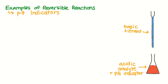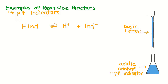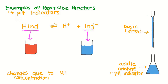When we first add the pH indicator to our solution, it's one color. But as we perform the titration experiment — in this case adding a base to an acid — the pH will change. At a certain point, when we've added enough of our base, the pH indicator will suddenly change color. As it turns out, these pH indicators are large organic molecules that have two forms. In one form, the indicator has a hydrogen and it's one color. In the other form, the indicator has lost that hydrogen and it's another color.